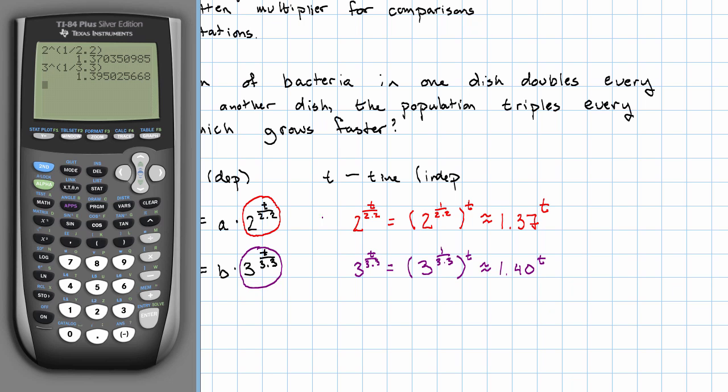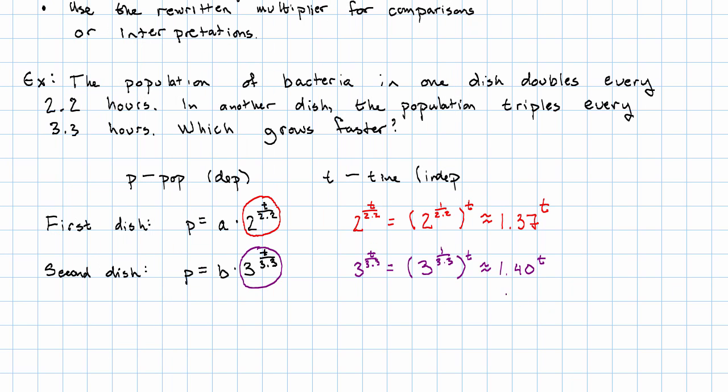Which one grows faster? Well, this is the bigger multiplier, so the population of the second dish grows faster.